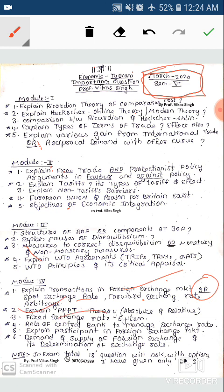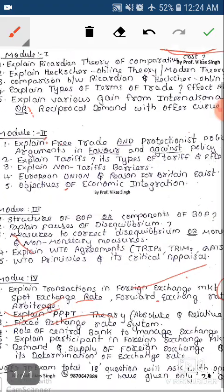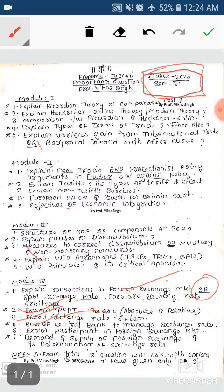Next question: PPT theory - Purchasing Power Parity theory - very important. Fixed exchange rate system - this question is very important. Role of central bank to manage the exchange rate. Explain the participants in the foreign exchange market like commercial banks, dealers, etc.